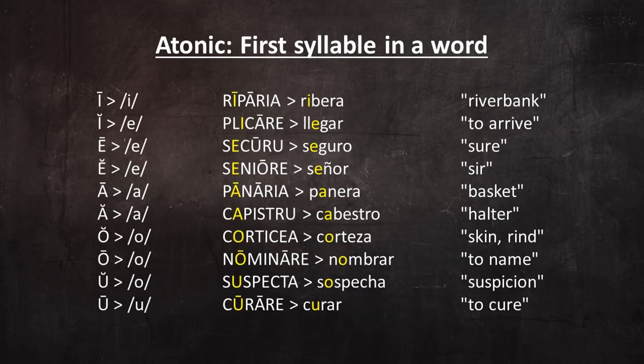Here's an example of each of the ten Latin vowels in a word-initial syllable and how it changed into Spanish. Of course, the ones that seem most unusual to us are the ones where short I became E and short U became O. But from the point of view of native speakers of Ibero-Latin, this was no bigger a phonological change than any of the other mergers. It just seems like it to us because of how those sounds were spelled.